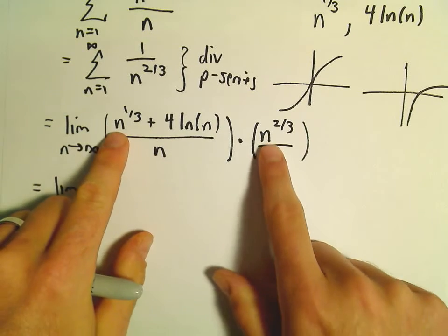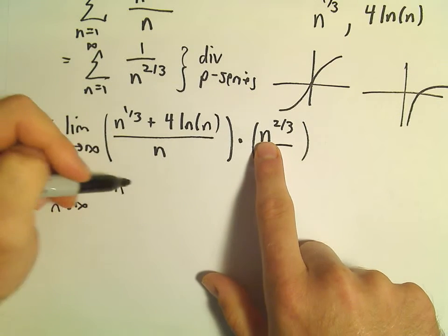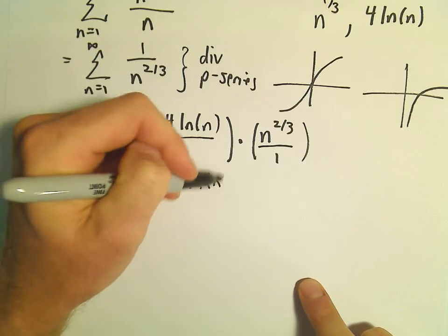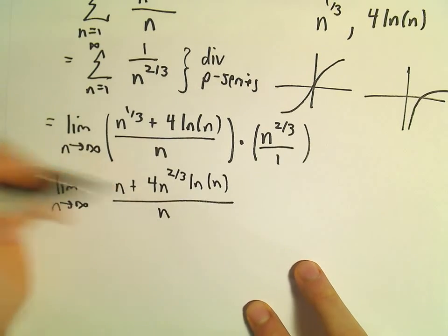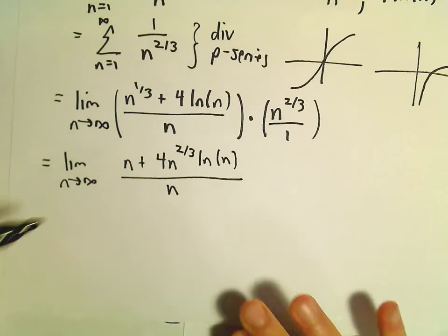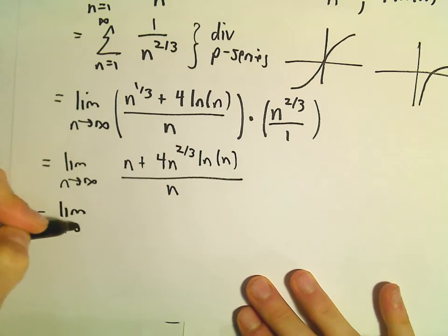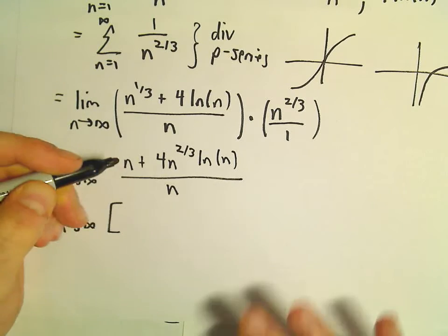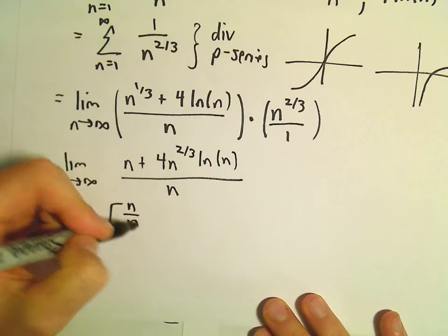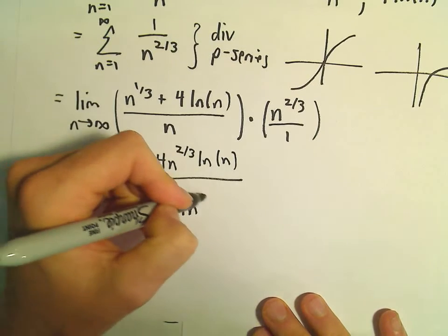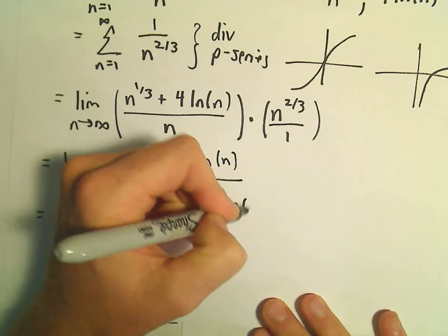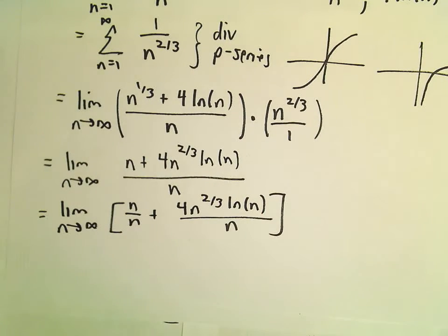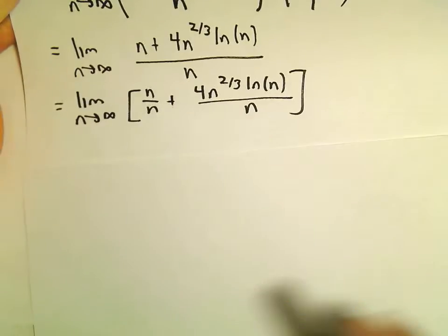So in the numerator, when we distribute, we'll get n to the 1st power. And then we'll get 4 n to the 2/3 times the natural logarithm of n, all over n. And what I'm going to do now is break this up. So this is the limit as n goes to infinity. We can write this as n over n plus 4 n to the 2/3 times the natural logarithm of n over n.